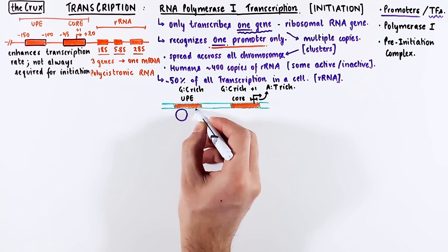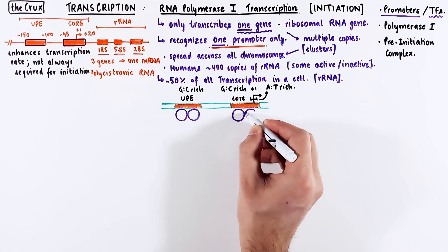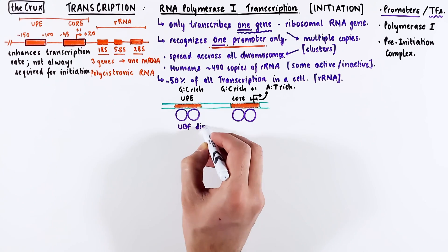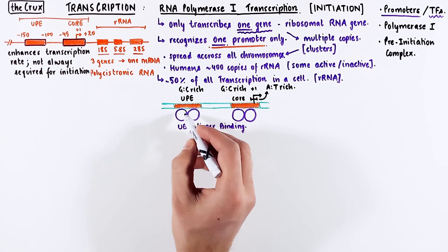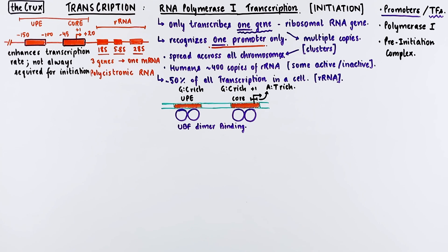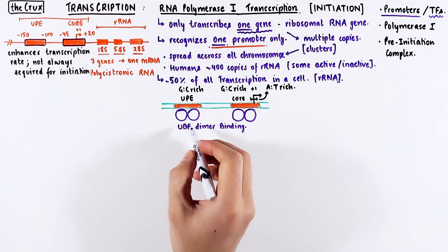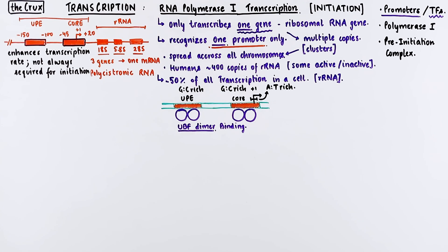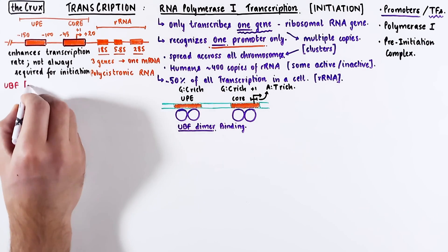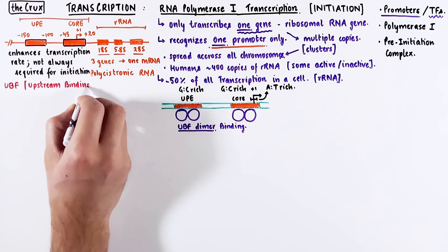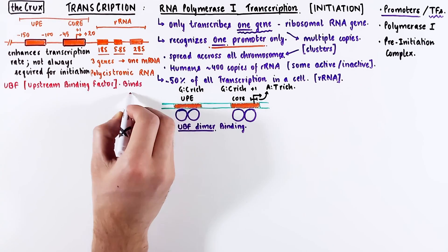The first transcription factor that enables the process of initiation is the upstream binding factor, which comes as a dimer. It binds to both upstream promoter element and the core promoter. Let's talk about this UBF factor in more detail. As we just said, UBF stands for upstream binding factor, and it binds UPE and the core promoter.